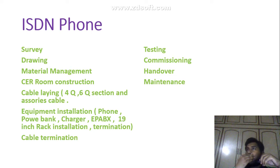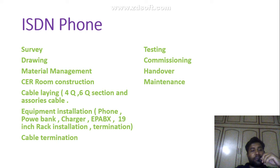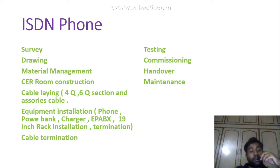When an ISDN phone is installed, the project work includes: survey, drawing, material management, CR room construction, and cable laying using four-quad cable and six-quad series cable. Equipment installations include phone, power bank, charger, ePBX, and 19-inch rack. Then terminations, testing, commissioning, handover, and maintenance.